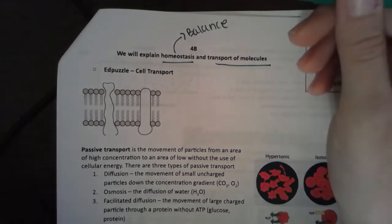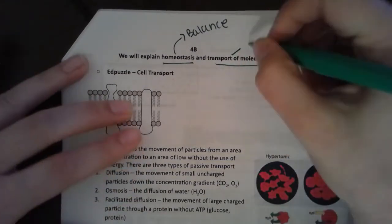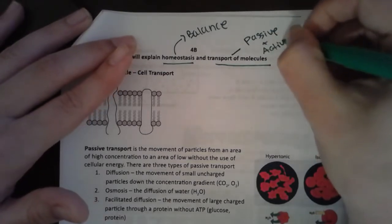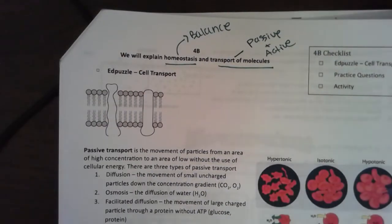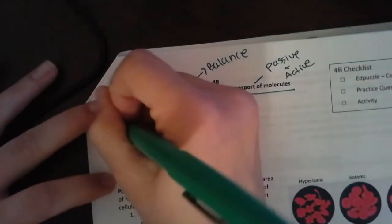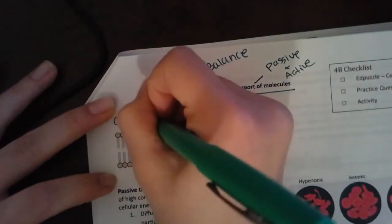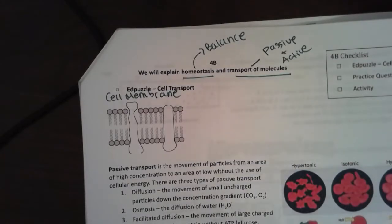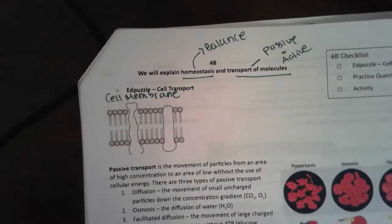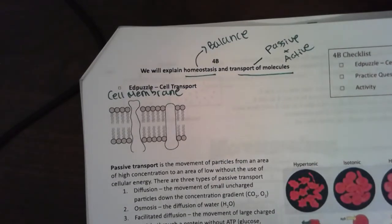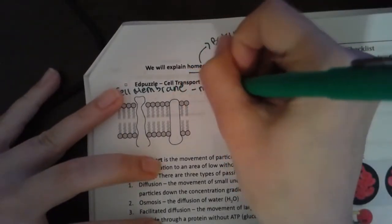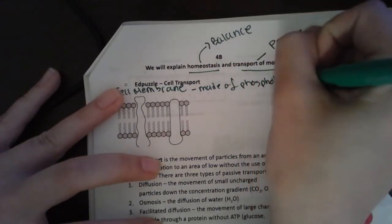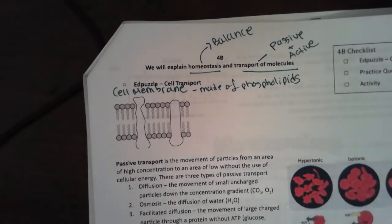We're going to be talking about two types of transport: passive and active. But before we get into that, we need to first go over the cell membrane because this is the key to understanding homeostasis and these types of transport. This is a model of the cell membrane. The cell membrane is made of phospholipids.